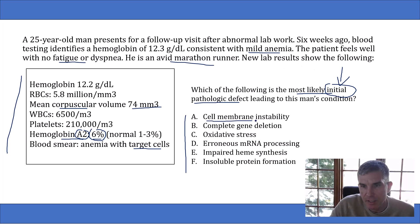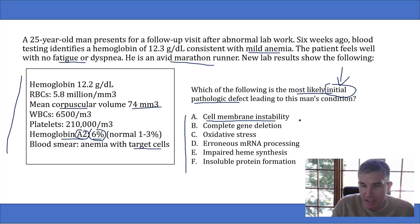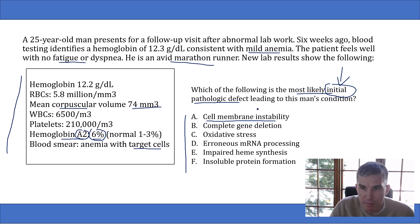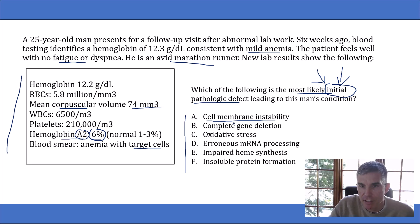Answer choice A says cell membrane instability. Cell membrane instability leading to anemia is a classic pathologic description of hereditary spherocytosis, which this man does not have. However, in beta thalassemia, patients don't produce properly matched amounts of alpha and beta globin chains, leading to clumps of globin molecules that precipitate inside the red cell. One of the problems those mismatched globin chains can cause is cell membrane instability. So answer choice A is something occurring in beta thalassemia, but they want the initial pathologic defect — so let's read the rest.